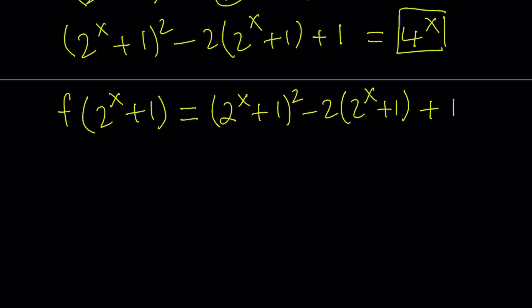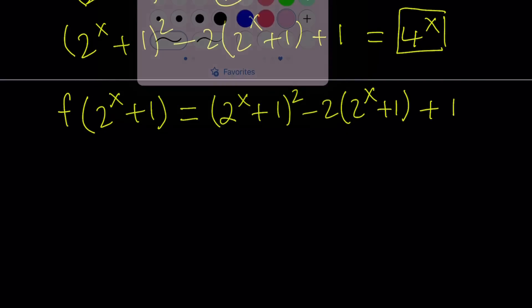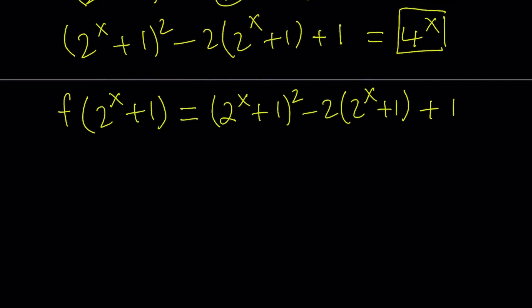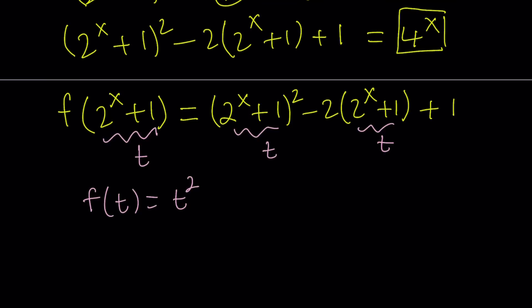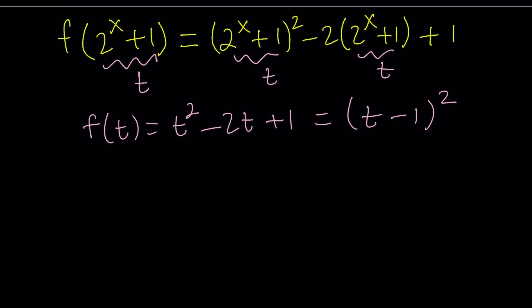This should be pretty obvious at this point — our goal is to get f of something, like f of x or f of t. So let's replace 2 to the power x plus 1 with t everywhere. We get f of t equals t squared minus 2t plus 1, which can be written as t minus 1, quantity squared. Since t can be replaced with any variable, replacing t with x gives us f of x equals x minus 1, quantity squared. That brings us to the end of the first method.